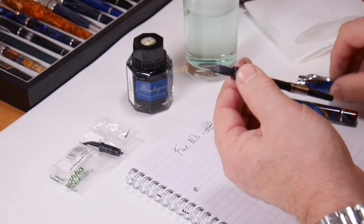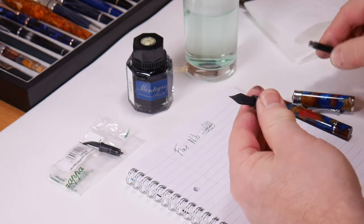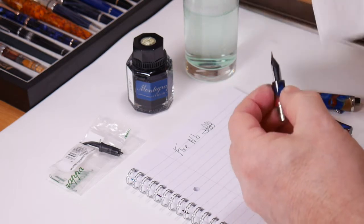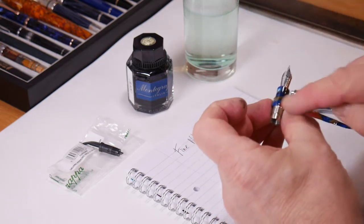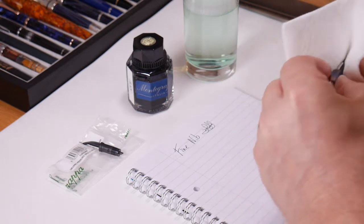Barrel and cap away. Unscrew the converter or pull out the ink cartridge if you're using those. Get a tissue and this is the shell and the nib unit combined, so we just need to unscrew the nib unit.